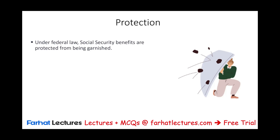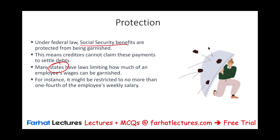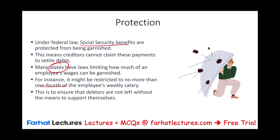There are protections under garnishment as well. Under federal law, people who receive social security benefits are protected from being garnished — creditors cannot take away your social security to settle your debt. Many states also have limits on how much of an employee's wages can be garnished. Each state is different, but for example, it might be restricted to no more than one-fourth of the employee's weekly salary. This is to make sure the debtor is not left without any means to support themselves.